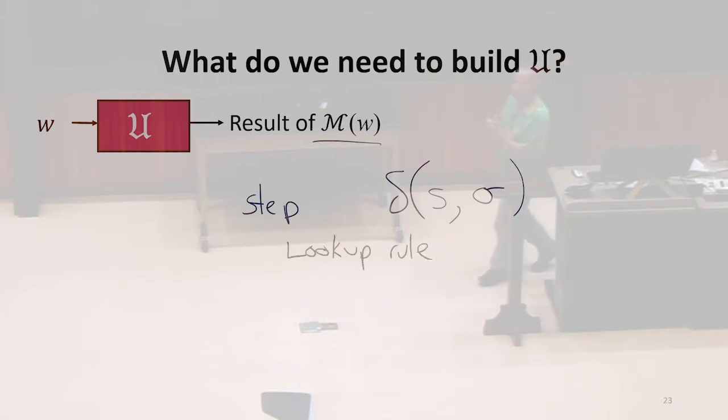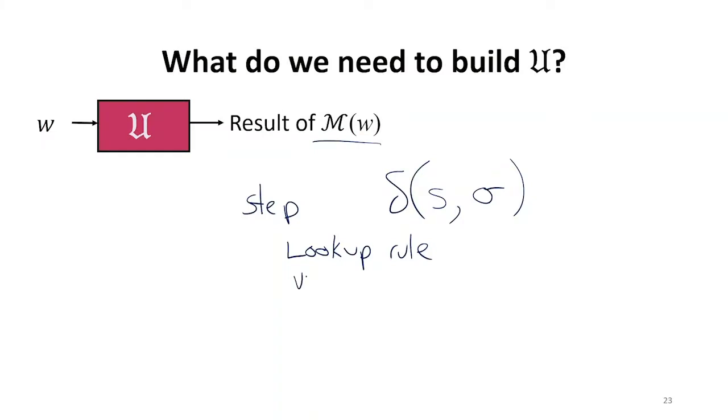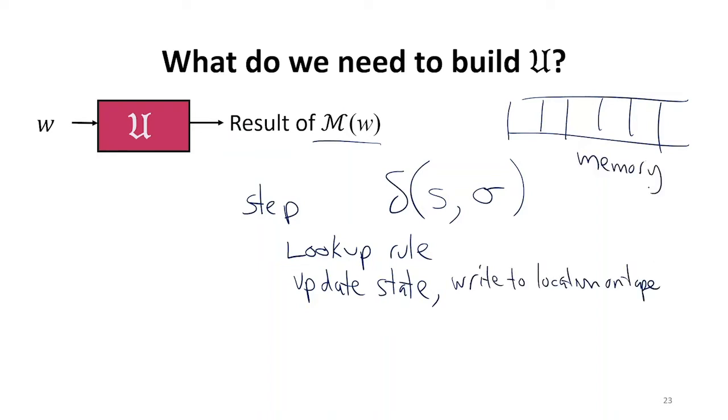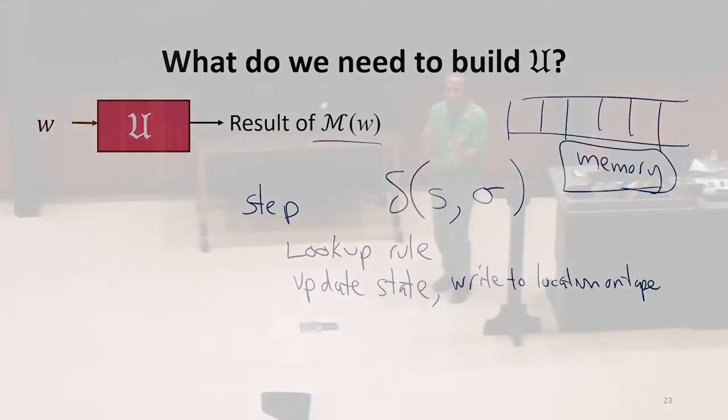And then we're going to have to update the state. Very similar to what we did for val, but now we're doing it for our Turing machine model. So we've got to also update what's on the tape. We're going to have to simulate both the state of mind, which is really just a number. That's just the number of the state in a finite state machine. And we've got to simulate the tape. So we're going to have to write to some location on the tape. So we've got to have memory. We've got to have some way to, based on what's in the table, do different things.